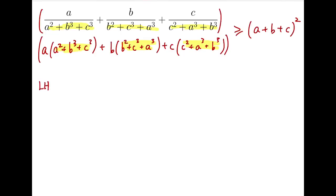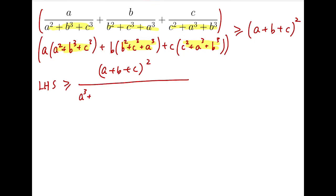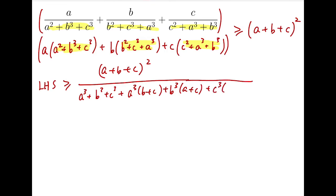So multiplying these two expressions, we will get by Cauchy-Schwarz (A plus B plus C) whole squared at the right-hand side, because A squared, B squared, C squared have square roots A, B, and C respectively. Now the expression at the left-hand side of our original inequality, by simplifying, is actually greater than or equal to (A plus B plus C) whole squared divided by (A cubed plus B cubed plus C cubed plus A cubed times (B plus C) plus B cubed times (A plus C) plus C cubed times (A plus B)).